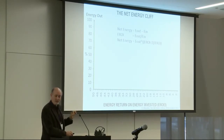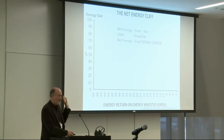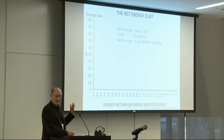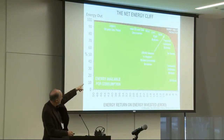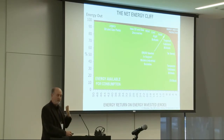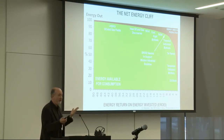We hear a lot about the fiscal cliff; there's also the net energy cliff. As your energy return on investment declines from a high number like 100 or 90, it makes virtually no difference to the amount of net energy compared with gross energy. But when you reach a value of about 8 to 1, the proportion of energy we have to spend to get our hands on energy becomes increasingly large very fast. This is another example of how we can't just look at one thing when another thing is equally important — it's a false dichotomy.